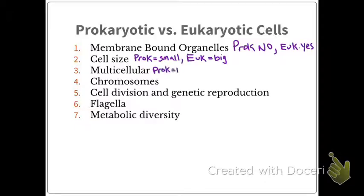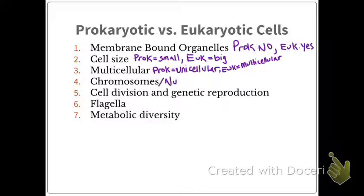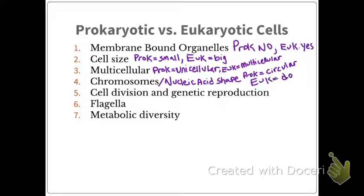Prokaryotes are unicellular, and eukaryotes are multicellular. For chromosomes, or nucleic acid shape: prokaryotes have a very simple shape, most of the time circular. Eukaryotes have a double helix DNA shape.